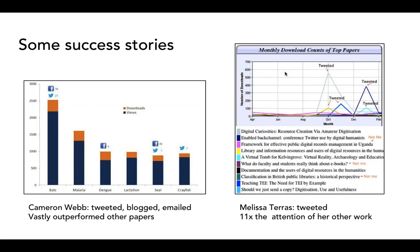Downloads are particularly significant because research has shown that downloads—especially for open access papers—tend to correlate with later citations. In the humanities we see similar trends: digital humanist Melissa Terrace tweeted and blogged about papers she made available in her institutional repository. On average, the papers she chose to promote got 11 times the online attention that the ones she did not promote received. There's an obvious advantage to promoting your work using social media, but you have to do it right.